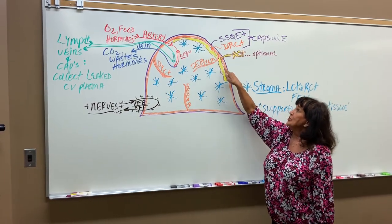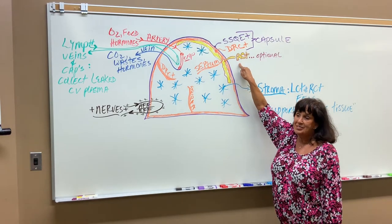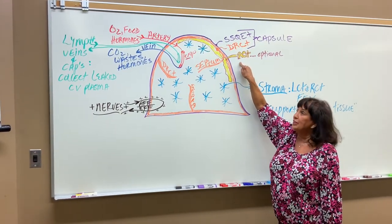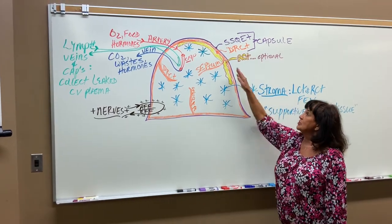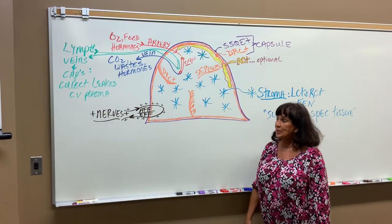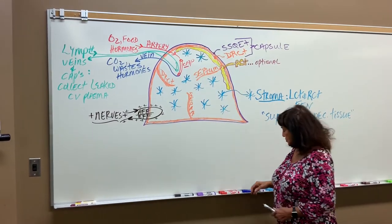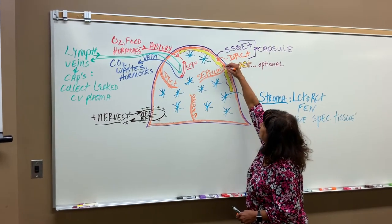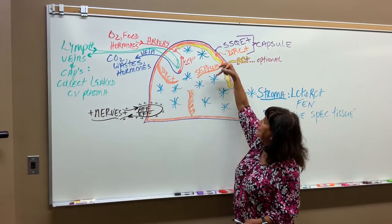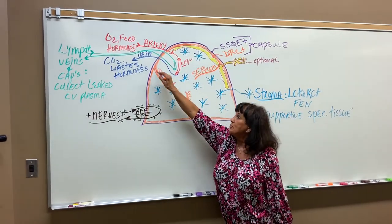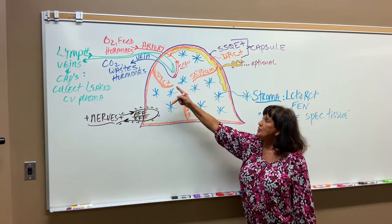Underneath the capsule, and sometimes under the dense reg, there could be fat pads, but fat is optional — it's ACT and not really part of the capsule itself. Now the dense regular CT from the capsule runs inward and makes the separators. This orange layer here is dense regular CT coming in to make the dividers. What do we call this dense reg CT that comes in from the capsule like a divider? We call that the septum — singular septum, plural septa.